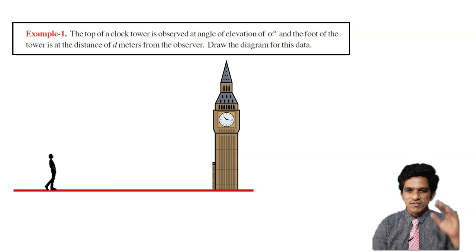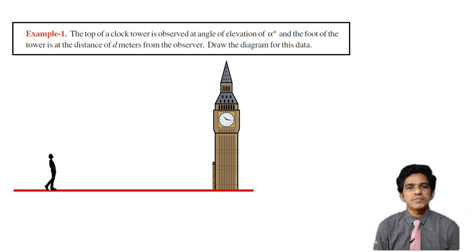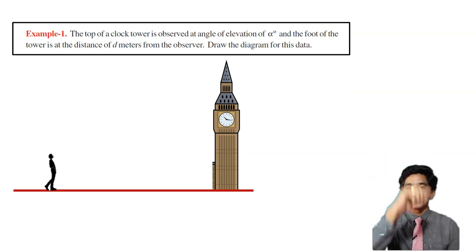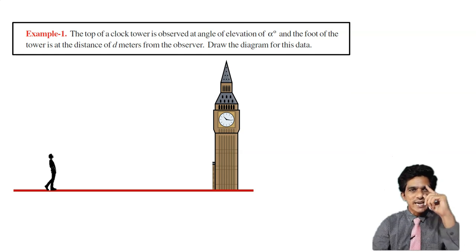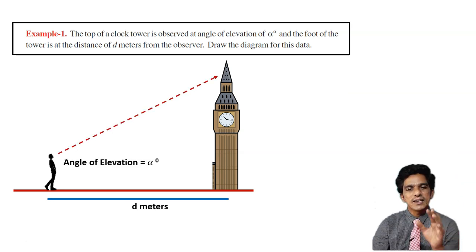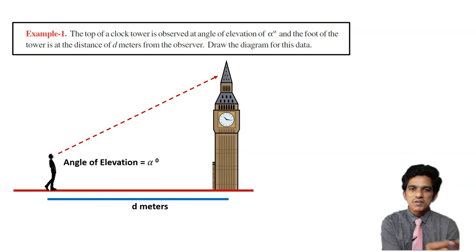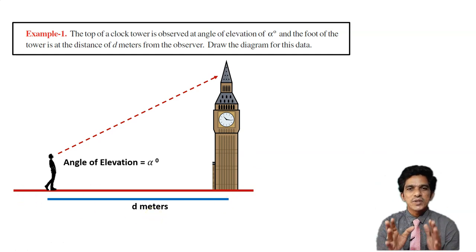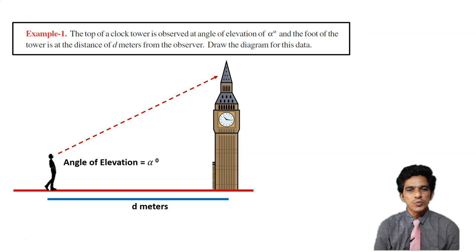So here we have a clock tower and there is an observer. The observer looks upward at the clock tower — that is the angle of elevation. The line of sight and the horizontal make an angle of alpha degrees, and the foot of the clock tower and the observer are separated by d meters. As tall objects are represented by straight lines, let us draw the clock tower as a vertical line.